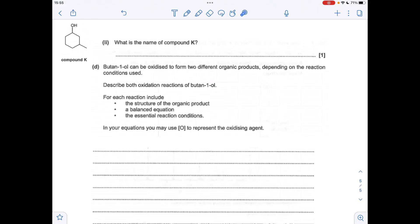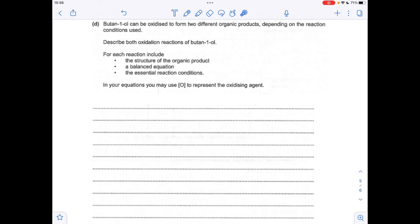Next part: what's the name of compound K? We've got cyclohexanol effectively with a methyl group on carbon one, two, three. So 3-methylcyclohexanol is the name. You could have said 1-methylcyclohexanol there if you wanted to, but there was no need for that.